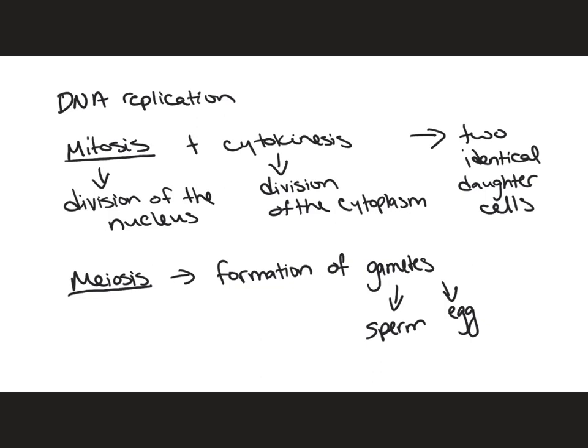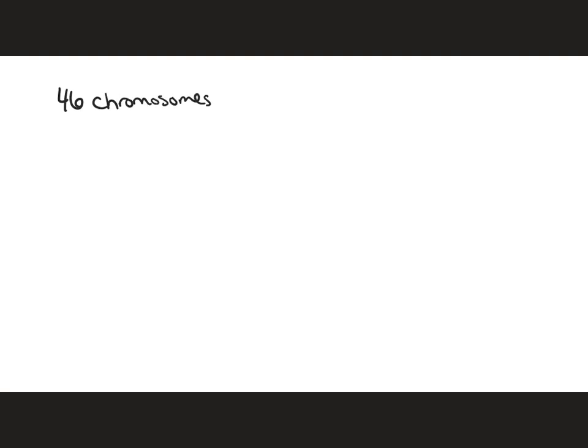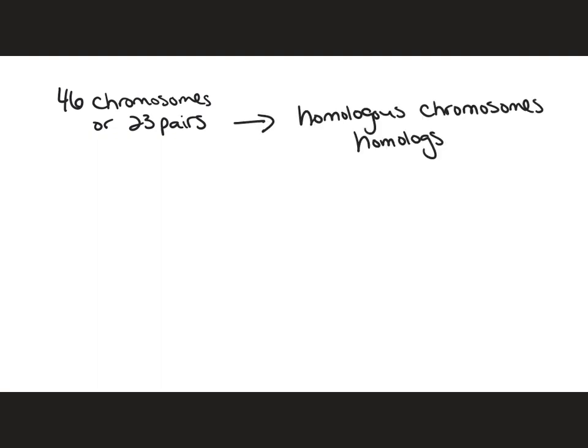In the next few slides we'll discuss in detail how this process occurs, and if you stay tuned throughout the entire video, at the end we'll discuss the differences between mitosis and meiosis. In a human cell there are 46 chromosomes, or 23 pairs. The two chromosomes in each pair are referred to as homologous chromosomes, or homologues.